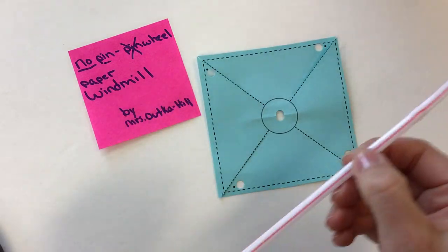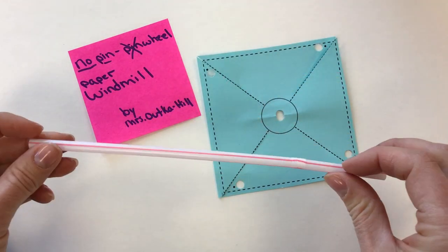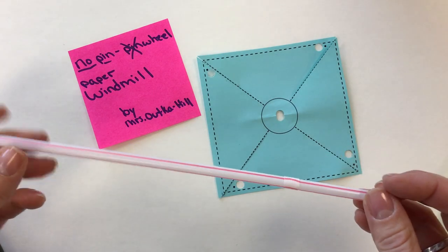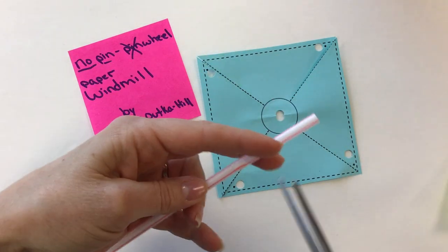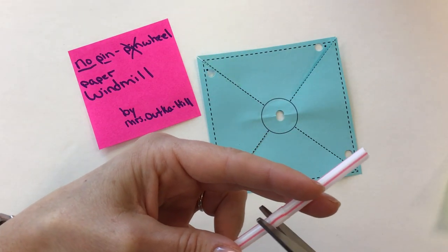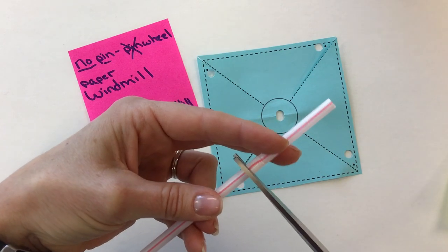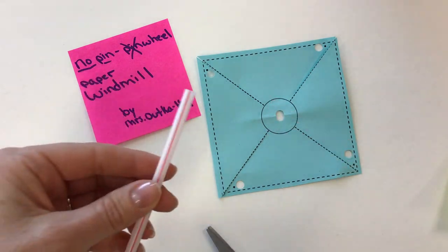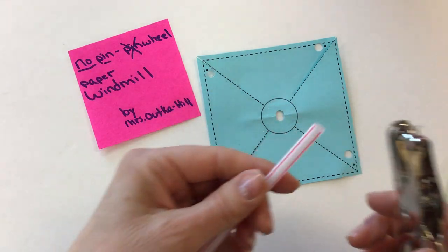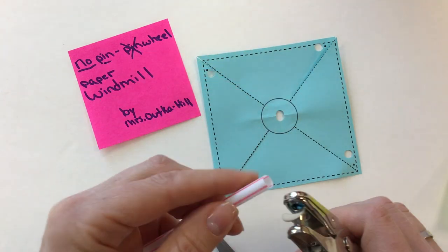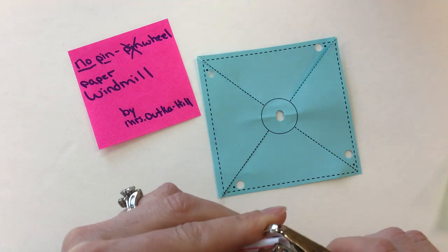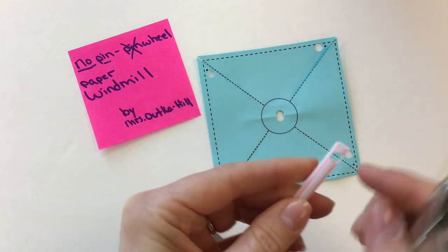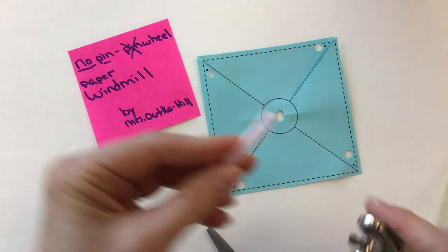The next thing that I need is my straw. I have a bendy straw. These seem to work the best because this keeps our windmill on the stick. So I'm going to cut just below the bendy part so that the bendy piece stays on the small section of the straw. The next thing I need to do is put a hole in one end of the longer piece of straw. Again, make sure that there's straw on both sides so that it doesn't fall off. So I have straw on this side, straw on this side.